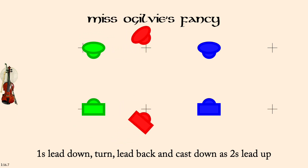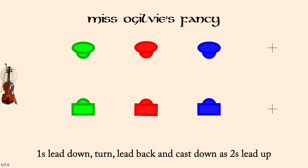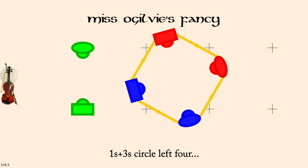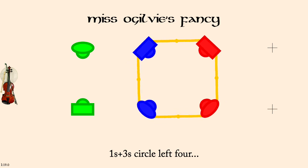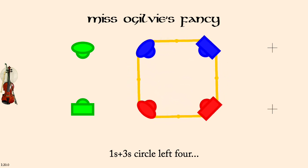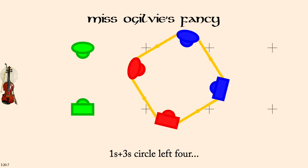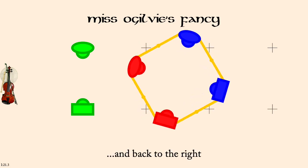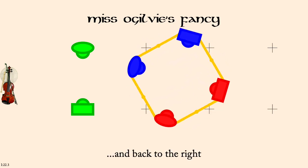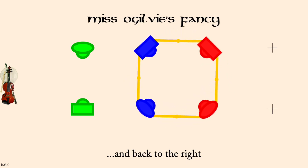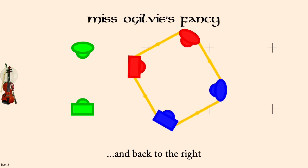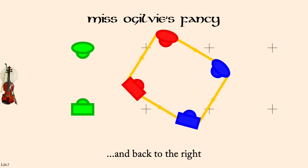Once in threes, circle left, four. And back to the right. Twos and ones, rights and lefts.